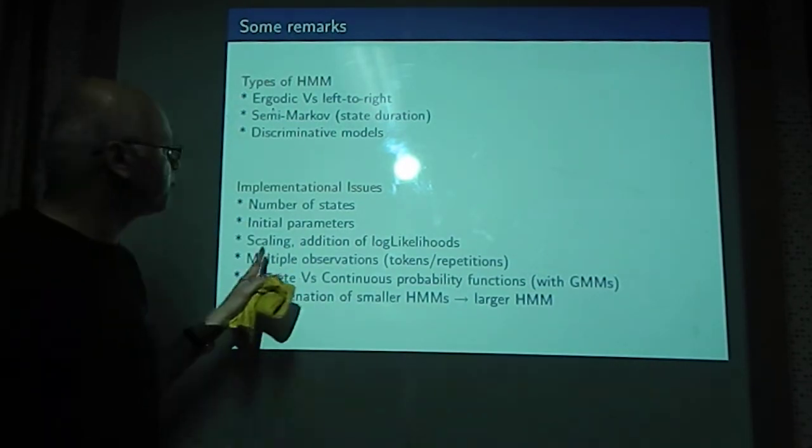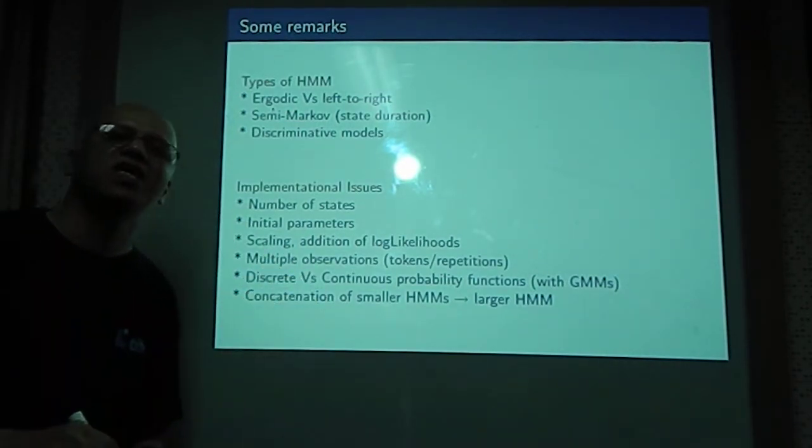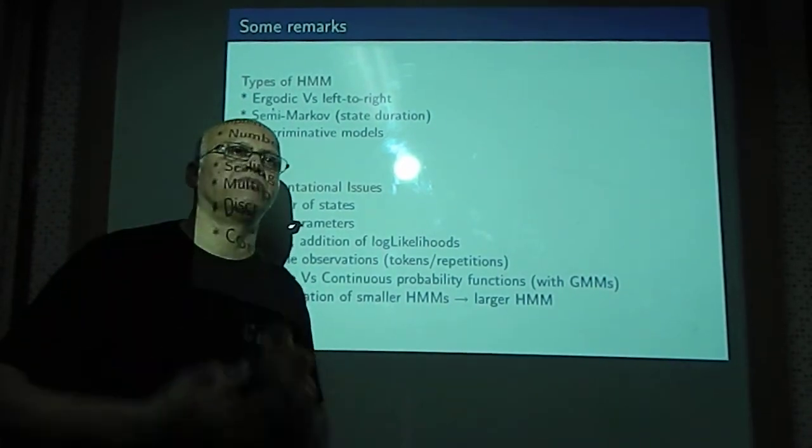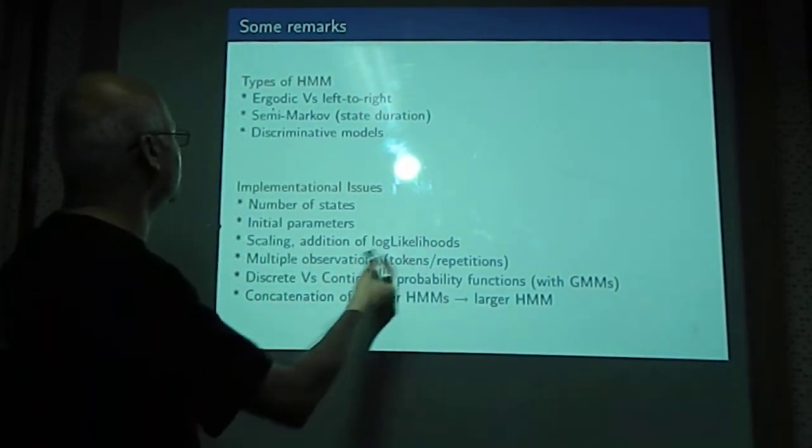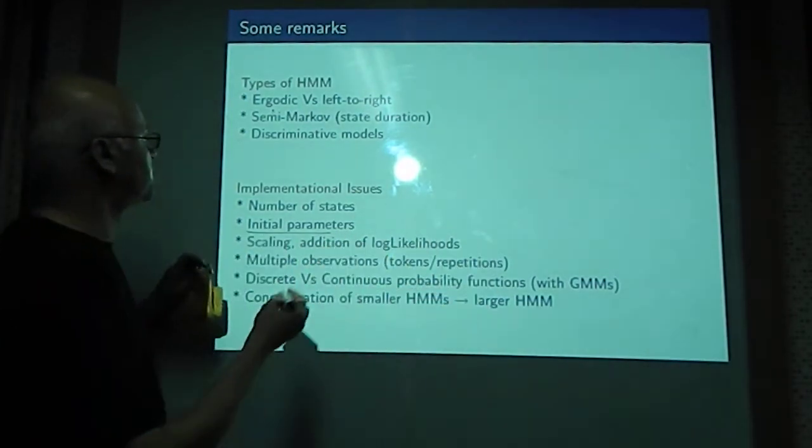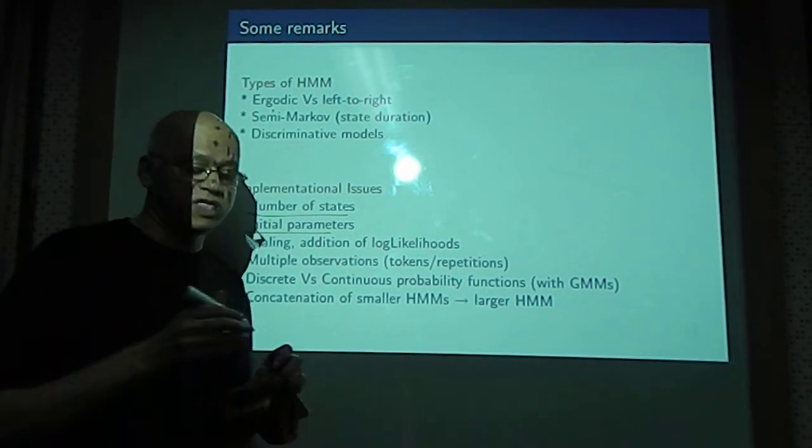Instead, we take log likelihoods, in which case, log likelihoods get added up. That is easier. So we use log likelihoods. How to estimate the initial parameters? We already saw. How many number of states should be there per phoneme? Typically, we take three, but it is up to us.